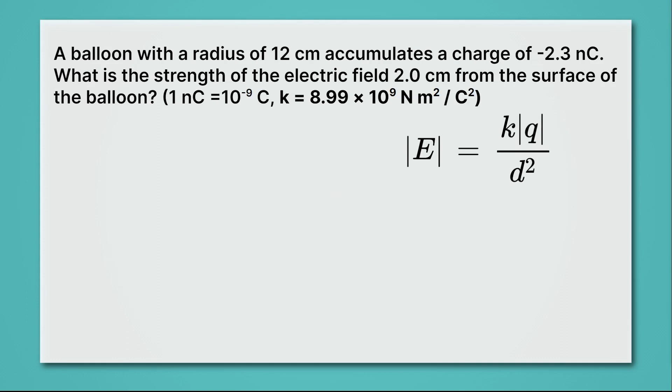Now, it's your turn to try. This problem says a balloon with a radius of 12 centimeters accumulates a charge of minus 2.3 nanocoulombs. What is the strength of the electric field 2 centimeters from the surface of the balloon? This problem is very similar to the one we just did. Remember to make sure you calculate the total distance from the center of the balloon to the area where you're interested in the electric field. And also remember to do the same conversions we did in the last problem. Pause the video and give this a try.